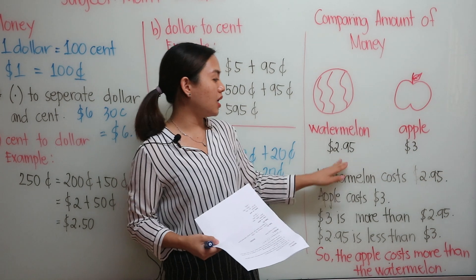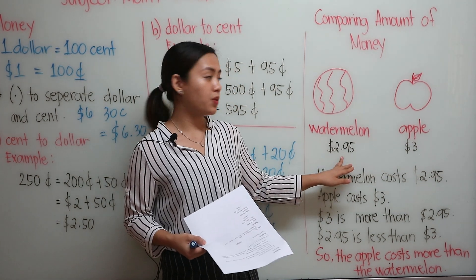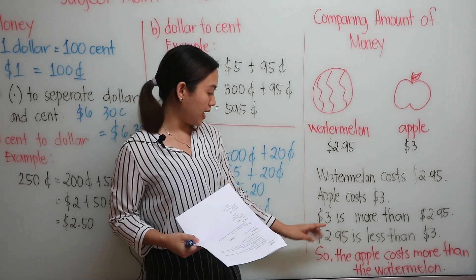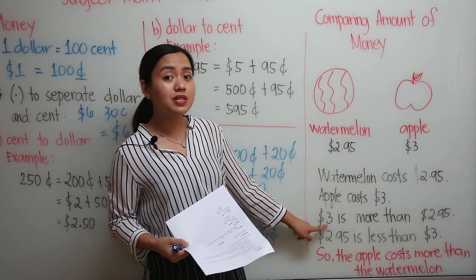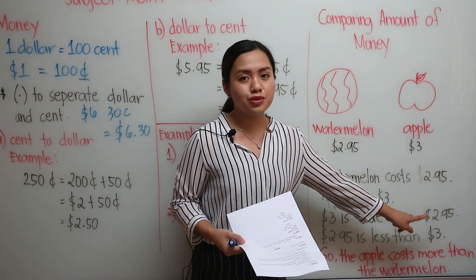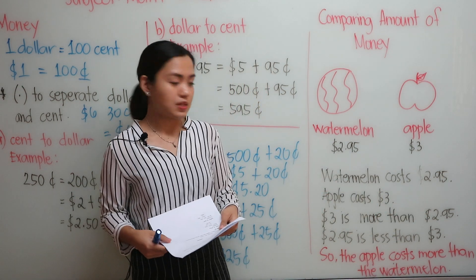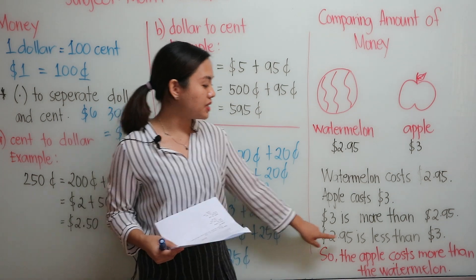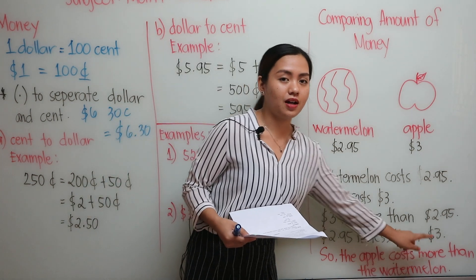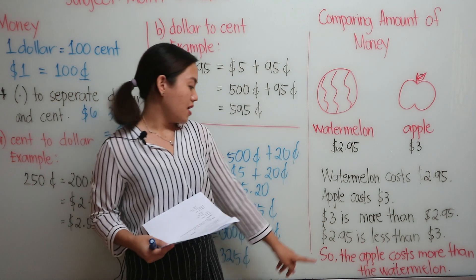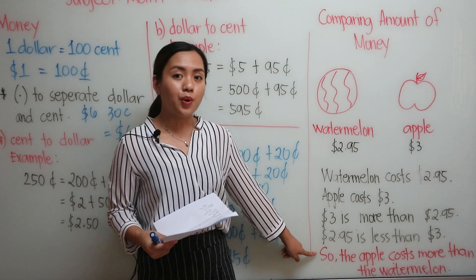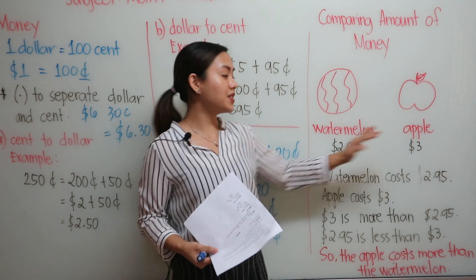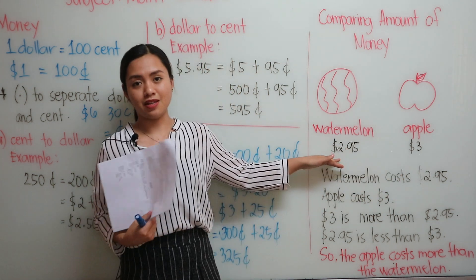So the watermelon costs $2.95, while the apple costs $3. And $3 is more than $2.95, and $2.95 is less than $3. So the apple costs more than the watermelon, because this is $3 and this is $2.95.